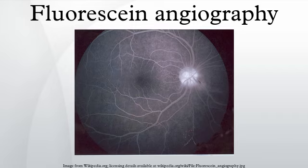Normal circulatory filling times are approximate: 0 seconds — injection of fluorescein; 9.5 seconds — posterior ciliary arteries; 10 seconds — choroidal flush; 10 to 12 seconds — retinal arterial stage; 13 seconds — capillary transition stage; 14 to 15 seconds — early venous stage; 16 to 17 seconds — venous stage; 18 to 20 seconds — late venous stage; 5 minutes — late staining.